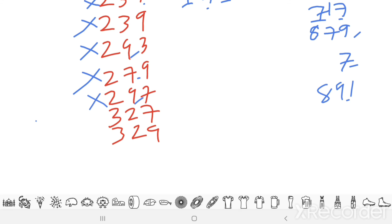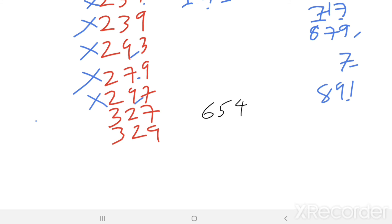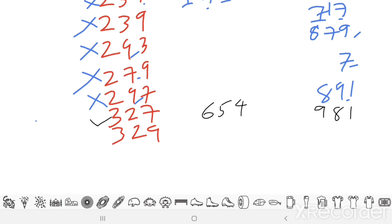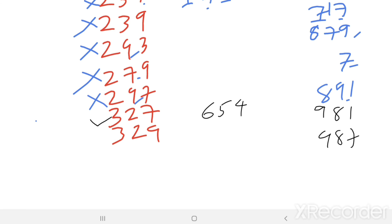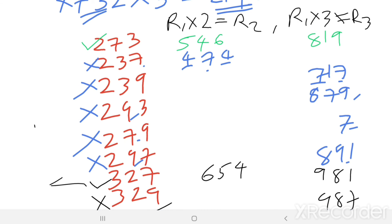For 327: 327 × 2 = 654 and 327 × 3 = 981. All digits are different with no repetition, so this is another valid combination. For 329: 329 × 3 = 987 — digit 9 repeats, so eliminate this as well. Therefore, only 2 combinations satisfy the given conditions.